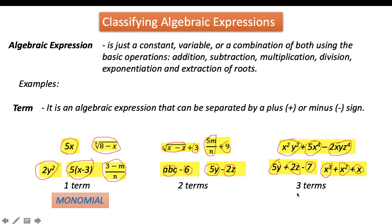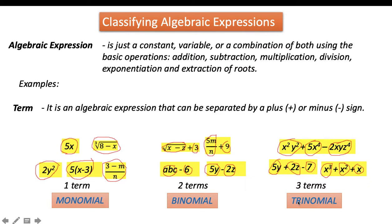Technically, an algebraic expression with one term is called a monomial. If it has two terms, it is called a binomial. If it has three terms, it is called a trinomial. If it has four or more terms, it is called a multinomial. And all of them are called polynomials.